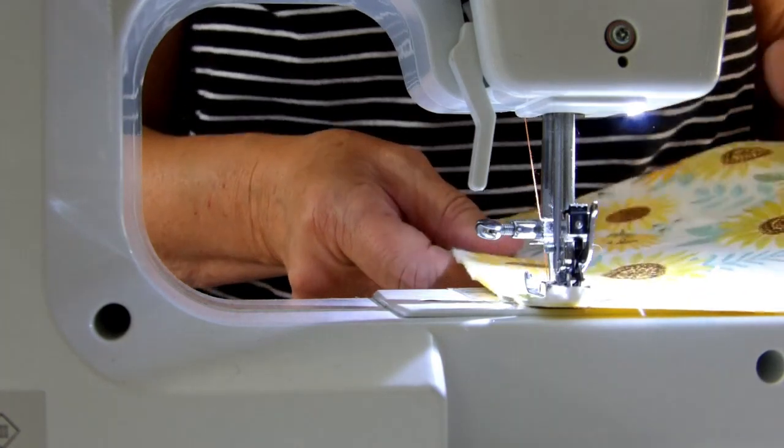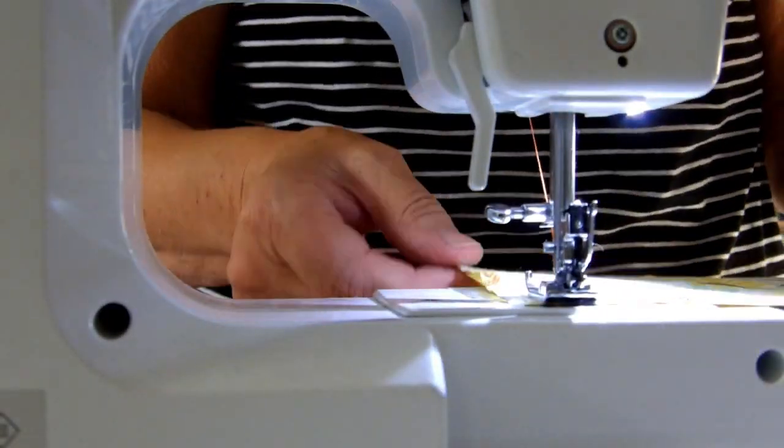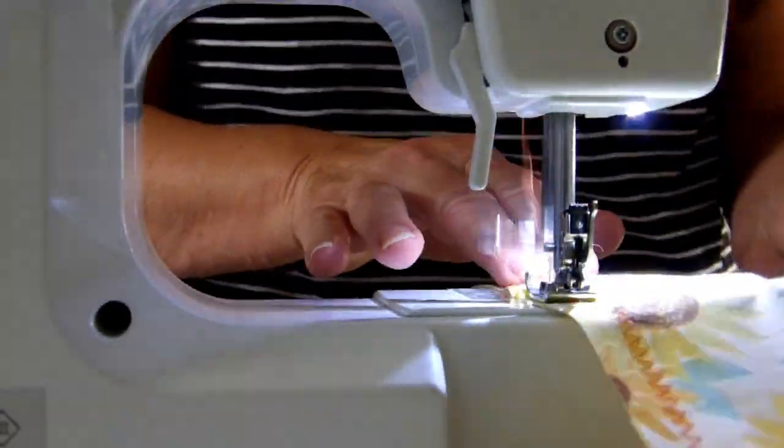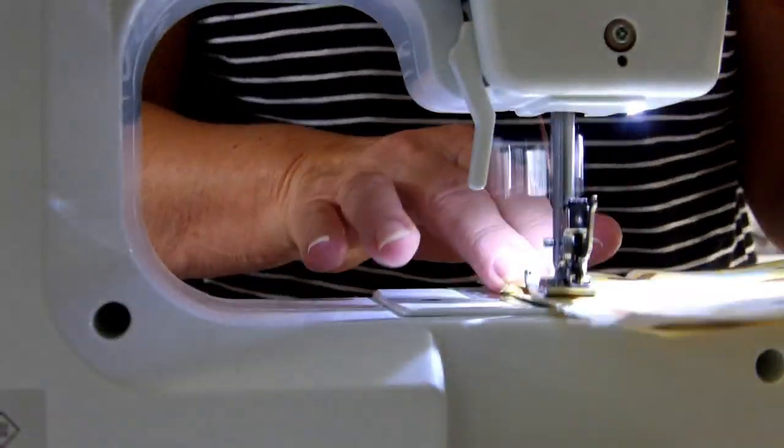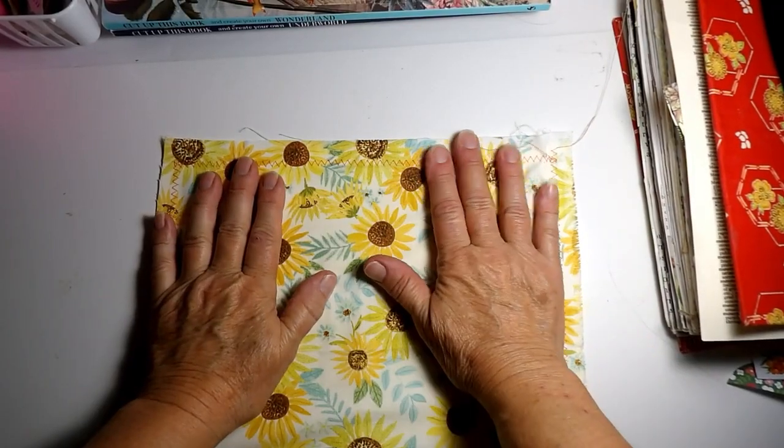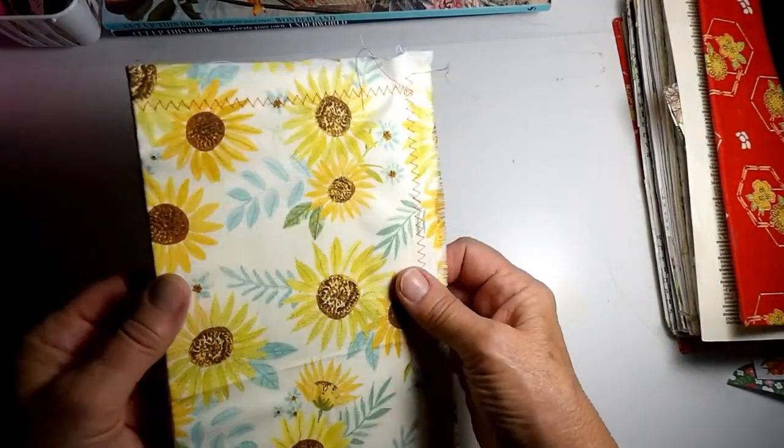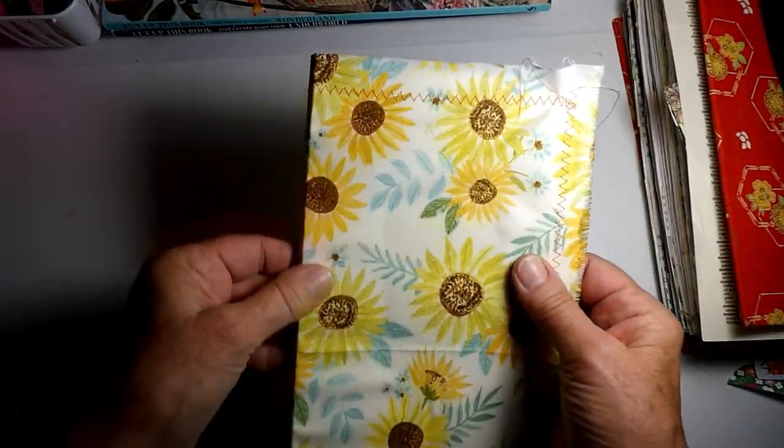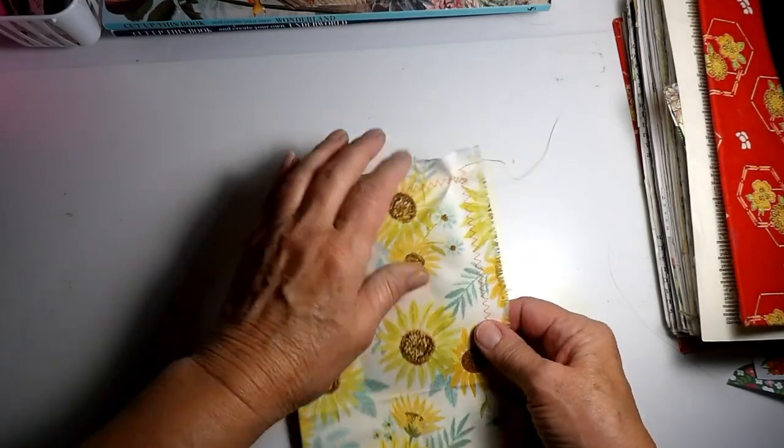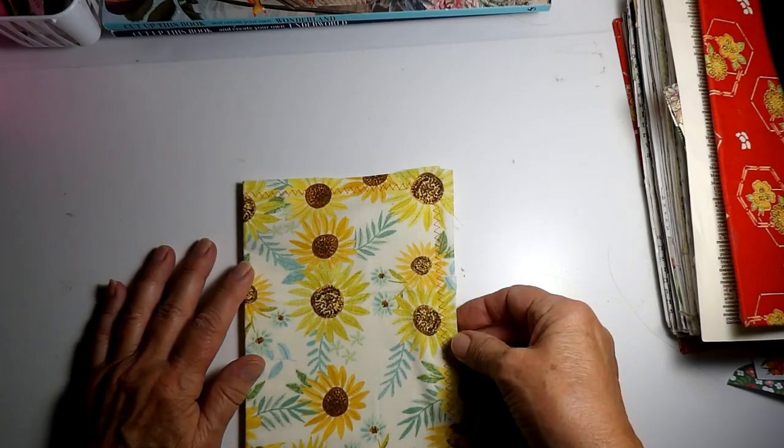I don't always remember to do a back stitch. Whenever I do this, I always think my fabric is as flat as it can possibly be, but I always get air bubbles and puckers in them.